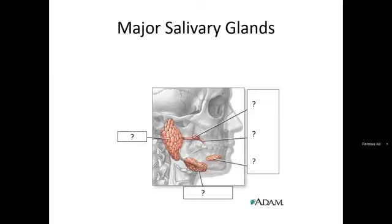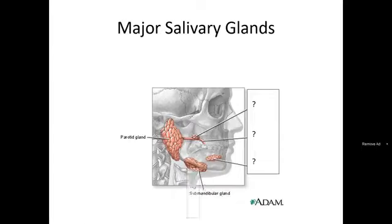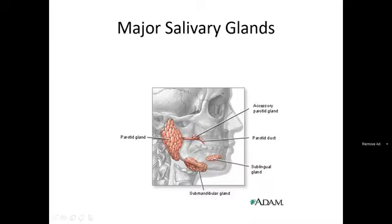In the major salivary glands diagram, there are some question marks you can identify if you study the topic thoroughly. The first is the parotid gland, located over the side of the cheeks. The second is the submandibular gland, below the mandible. The third is the sublingual gland, below the tongue. The fourth is the parotid duct, which is the communication between the parotid gland and the mouth, with an accessory parotid gland lying in the middle of the duct.